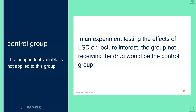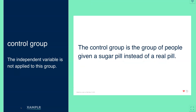For example, in an experiment testing the effects of LSD on lecture interest, the group not receiving the drug would be the control group. So the experimental group would have gotten the LSD, the control group does not, and measuring the difference between those two groups is the point of the experiment.